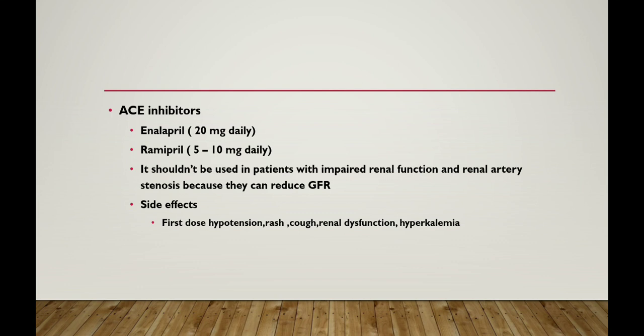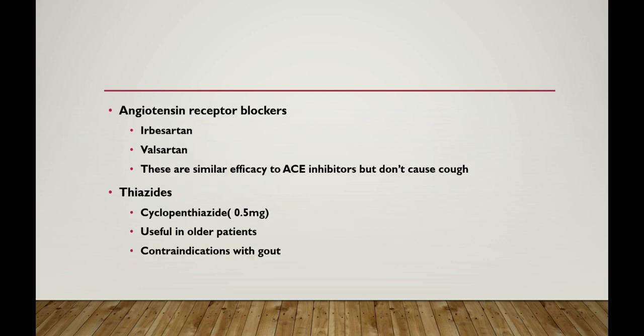Side effects of ACE inhibitors include first-dose hypotension, rash, cough, renal dysfunction, and hyperkalaemia. Angiotensin receptor blockers such as irbesartan and valsartan are commonly used; they have similar efficacy to ACE inhibitors but do not cause cough. Thiazide diuretics — cyclopenthiazide 0.5 mg — are used in older patients but are contraindicated in patients with gout.